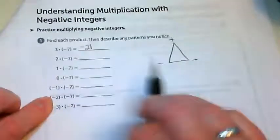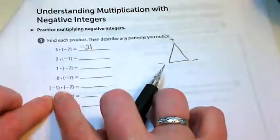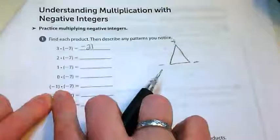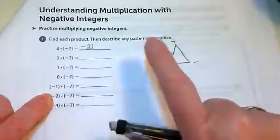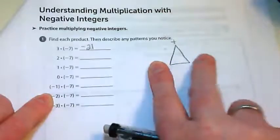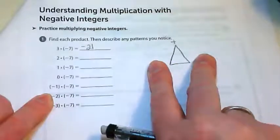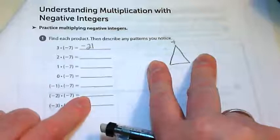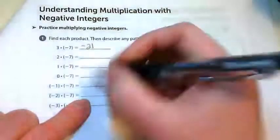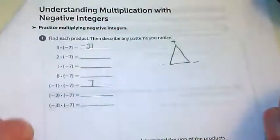The same works with this triangle if I have a negative times a negative. So let's cover up the negative and I'm going to cover up a negative. What's left is a positive, reminding me that when I'm multiplying two negatives, I end up with a positive. So the answer to this is just 7.